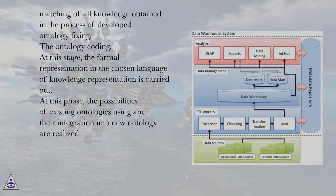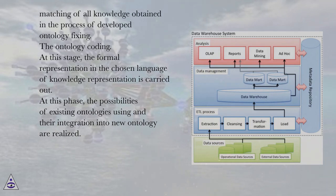Matching of all knowledge obtained in the process of developed ontology fixing. The ontology coding stage involves the formal representation in the chosen language of knowledge representation. At this phase, the possibilities of using existing ontologies and their integration into a new ontology are realized.